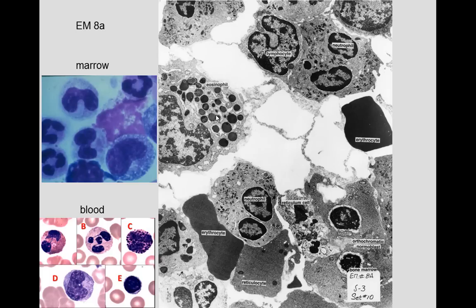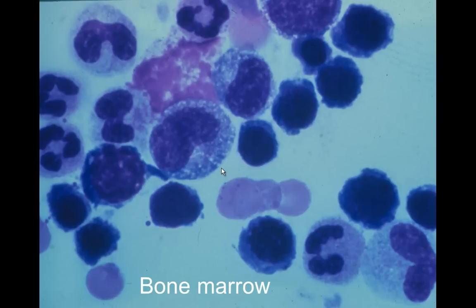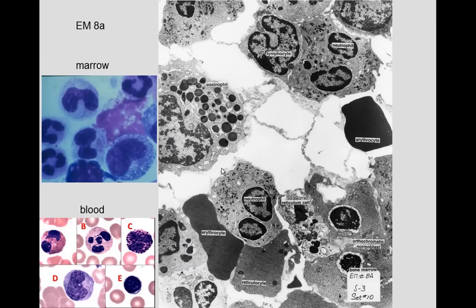The granules of the developing neutrophil are much smaller than those of the eosinophil, which has very large granules with a crystalline core visible by EM. The neutrophil has specific granules that are dumbbell-shaped, as we'll see shortly. Cells with non-spherical, oval nuclei will go on to produce neutrophils, basophils, or eosinophils.